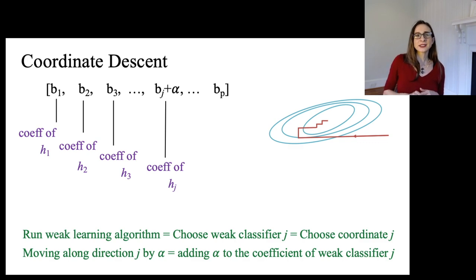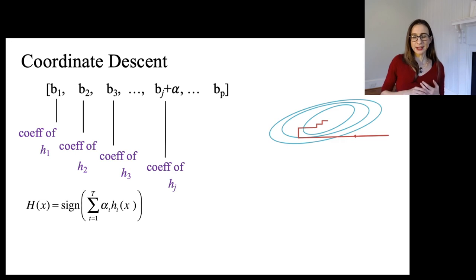So I should mention that I overload notation where index T means iteration number and then index J means, if I wrote all the decision trees out, it's decision tree J, right? So I can write the final combined classifier. I can write it as a sum over J and then add up all the updates that we had for each weak classifier J.